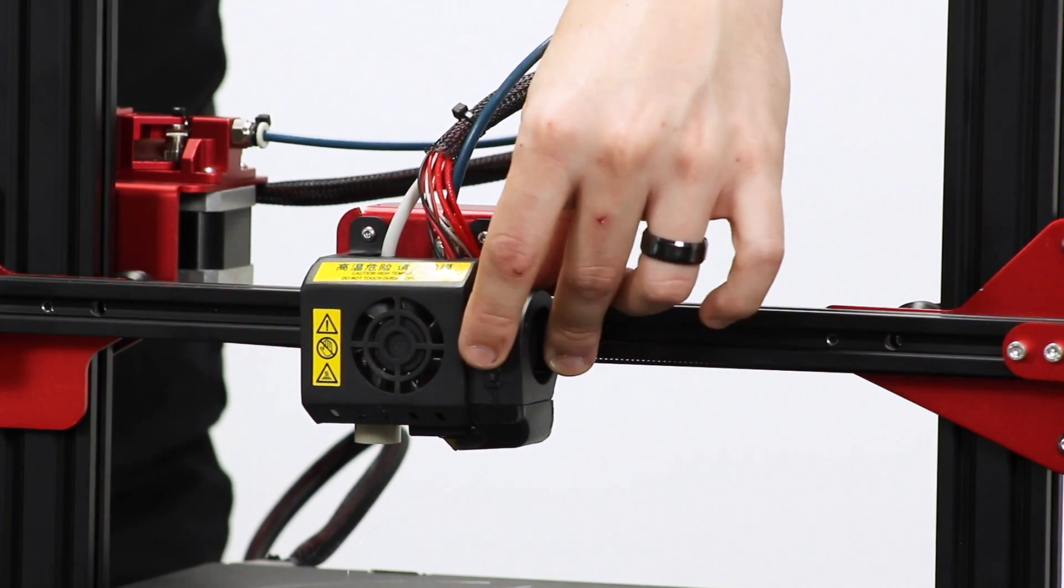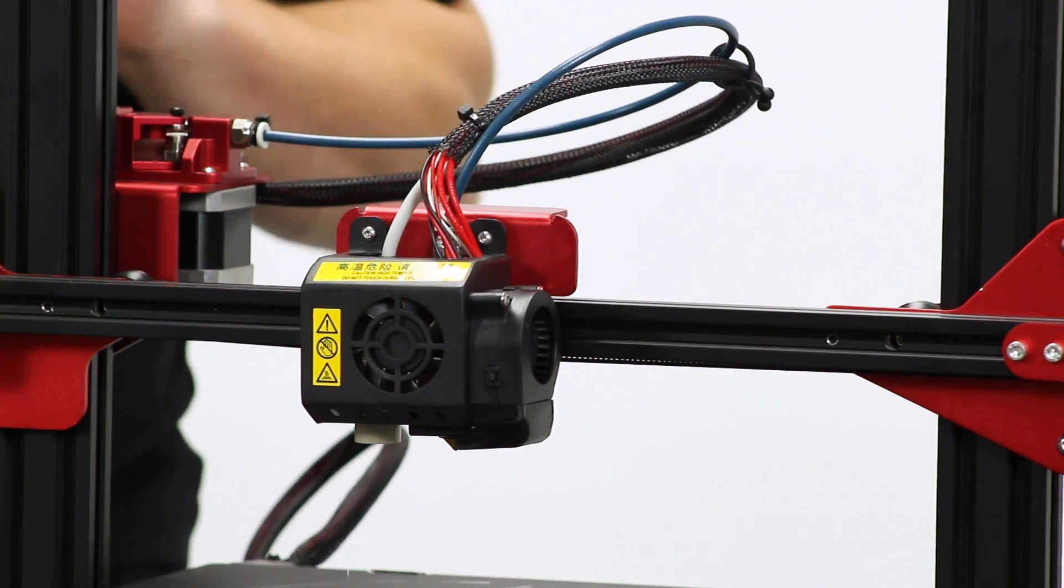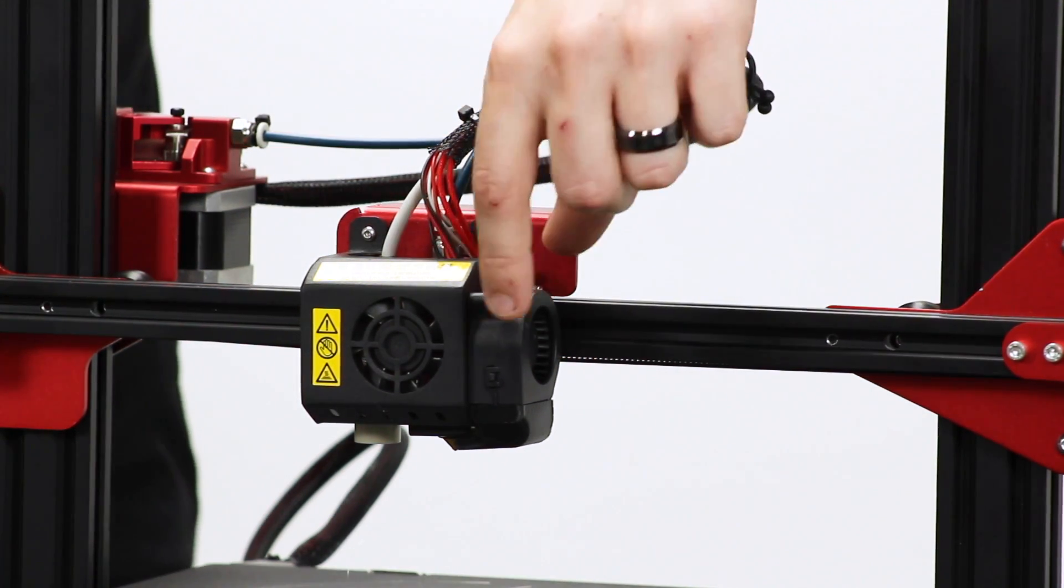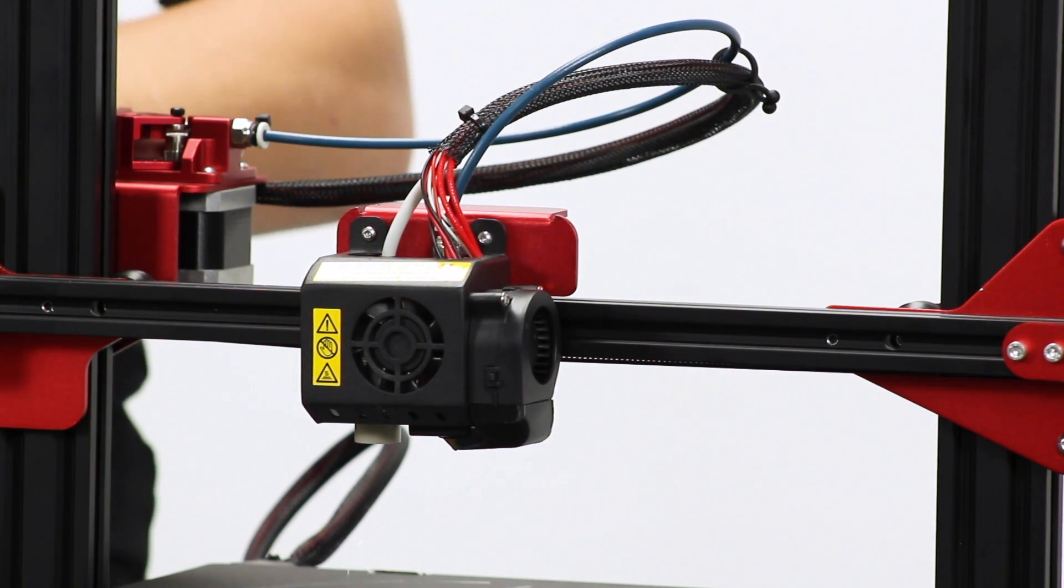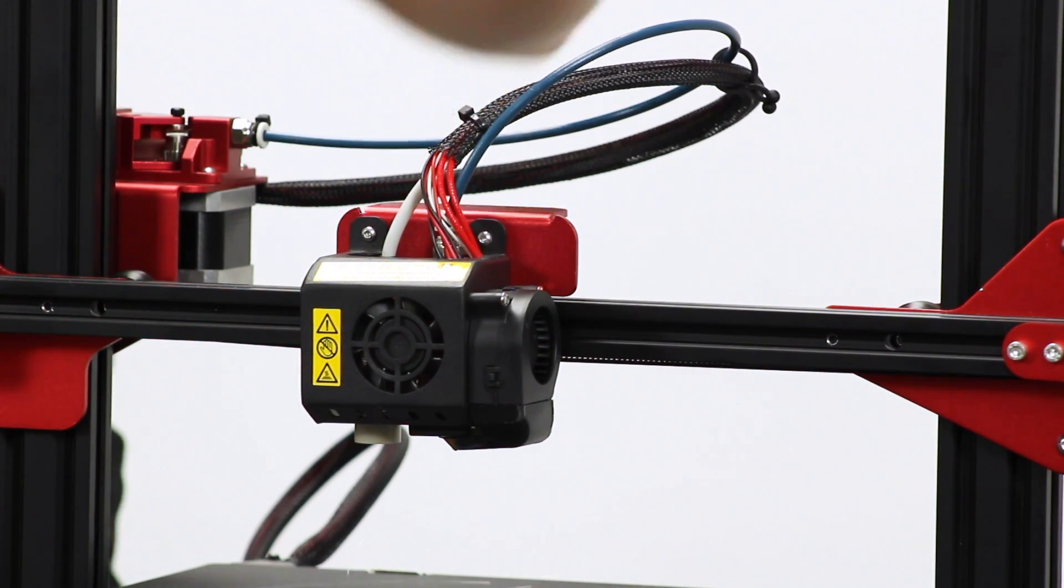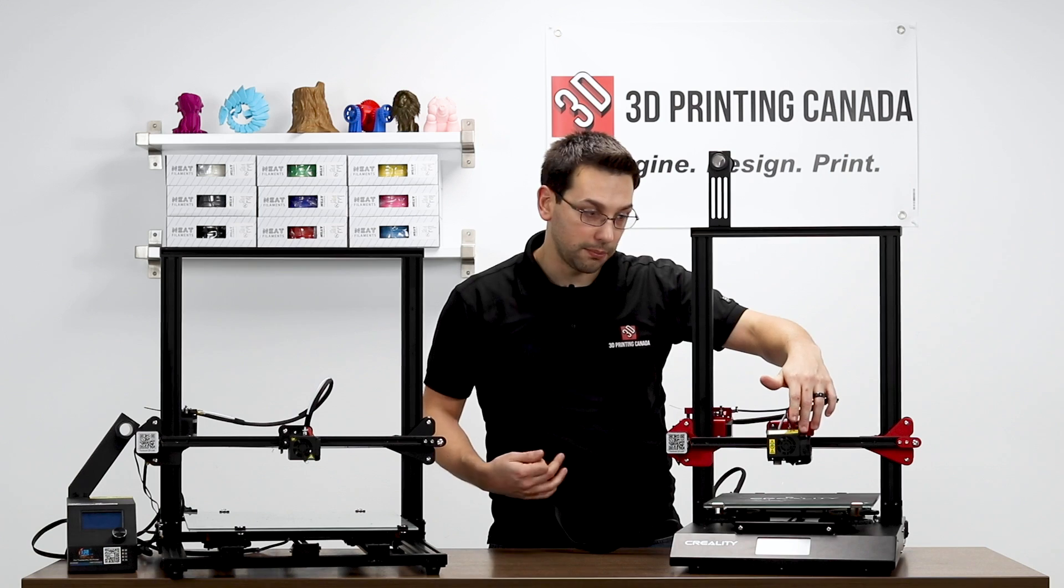So on the side, they have a significantly beefed up or improved cooling fan for the part cooling fan. It's a 40-20 radial fan, which has a much higher static pressure rating than an axial fan would. So it's the proper type of fan to use, in my opinion.